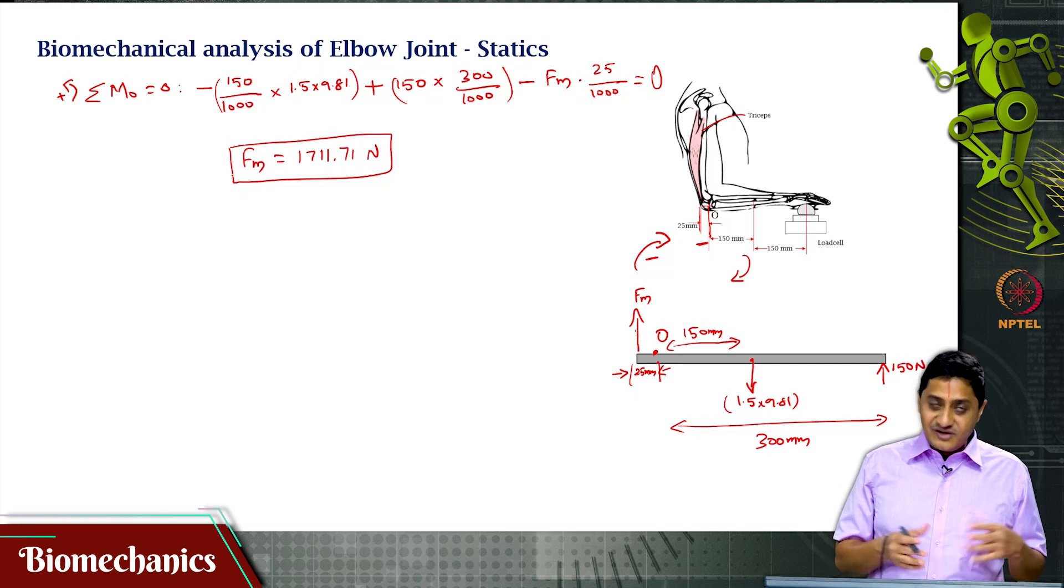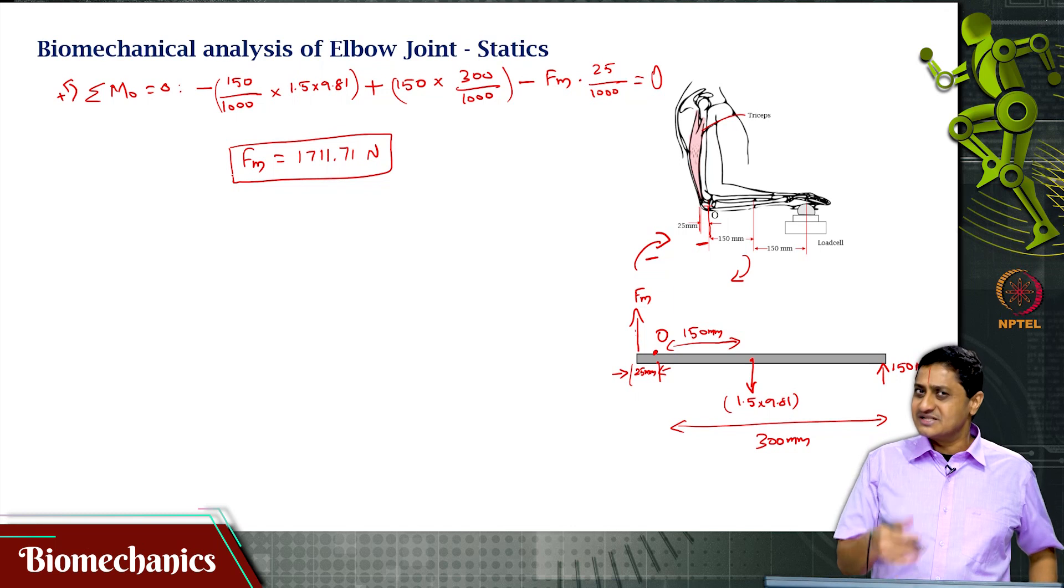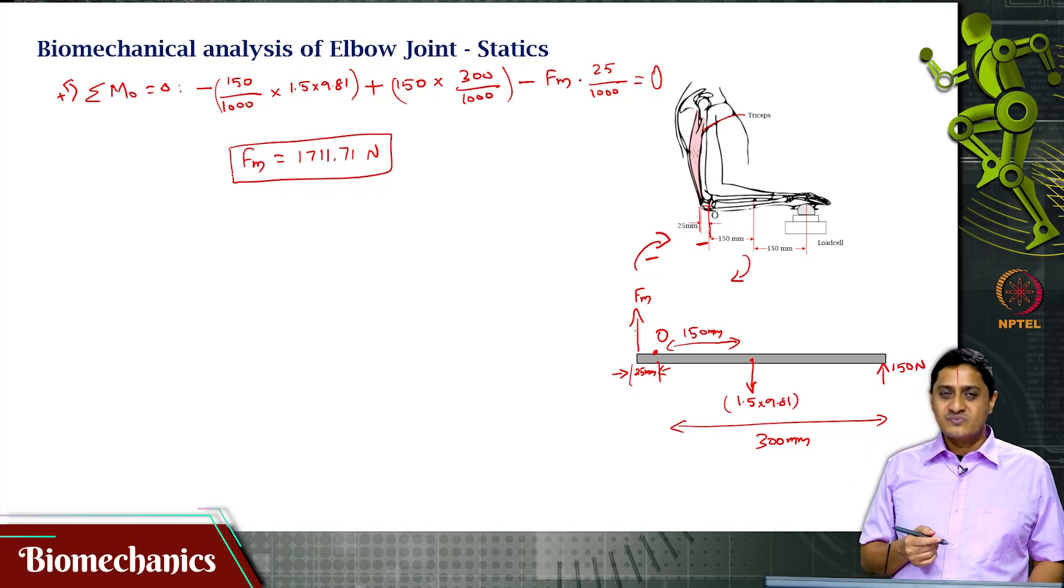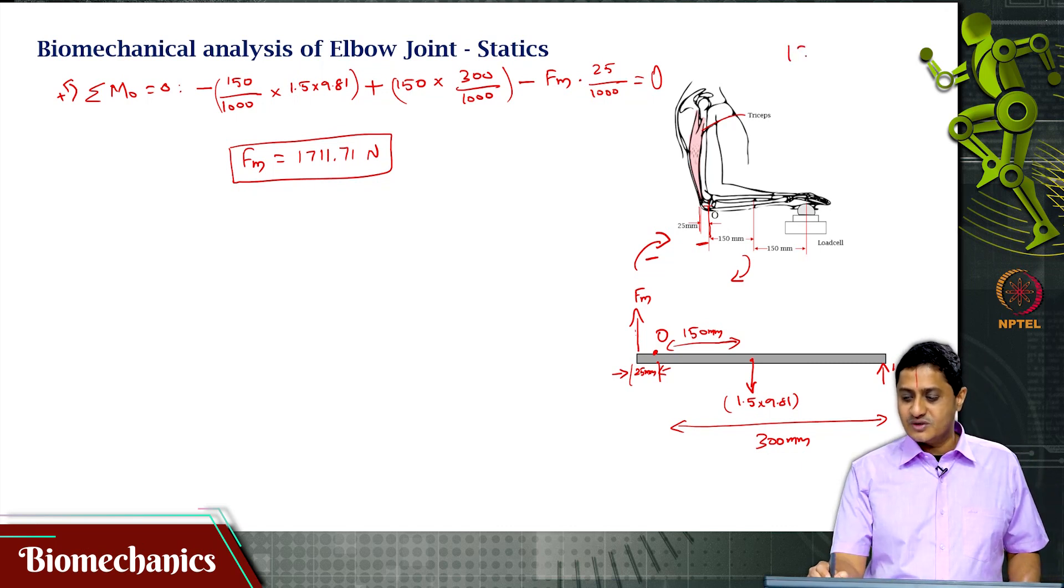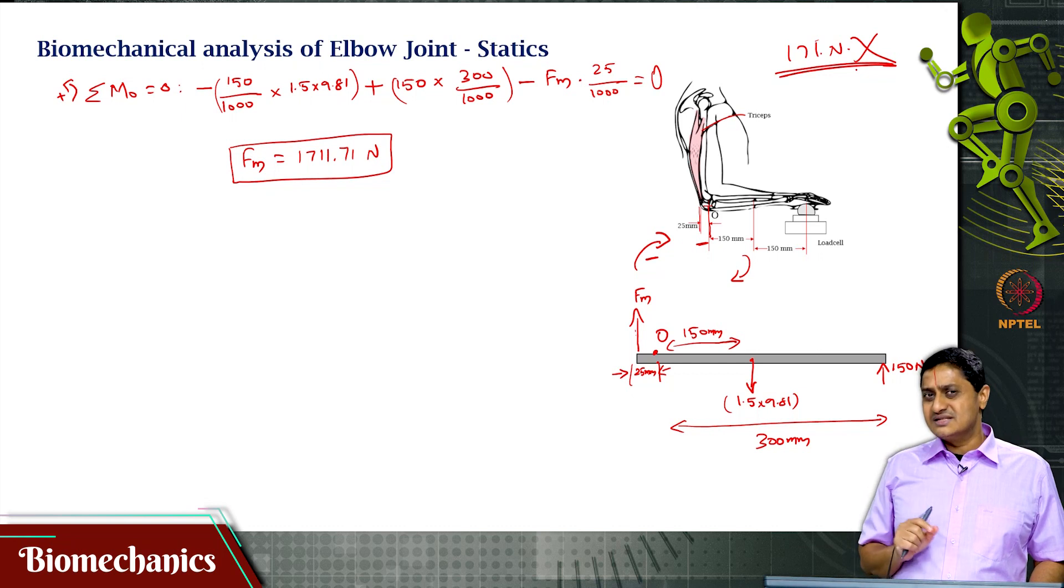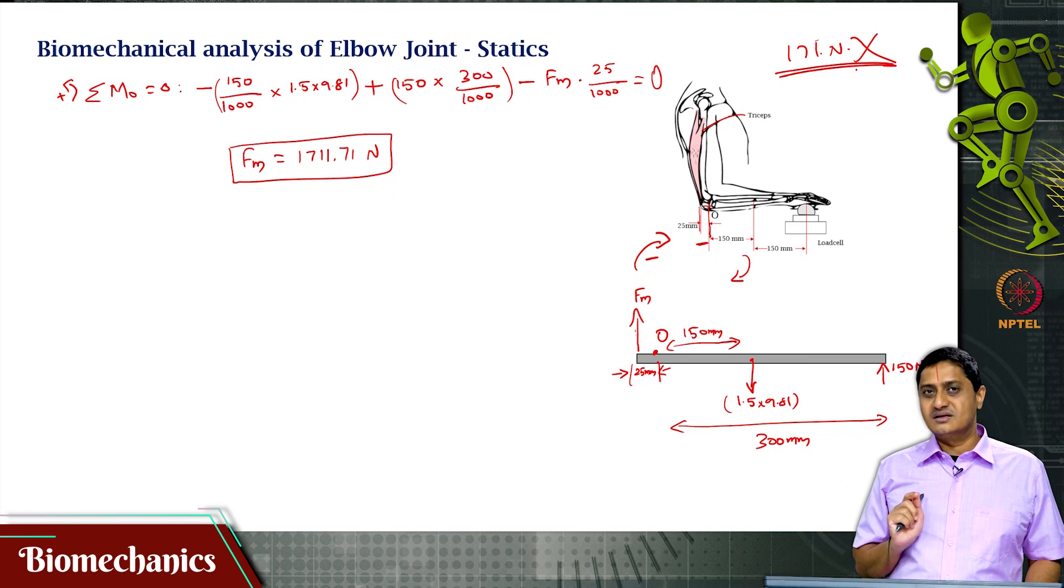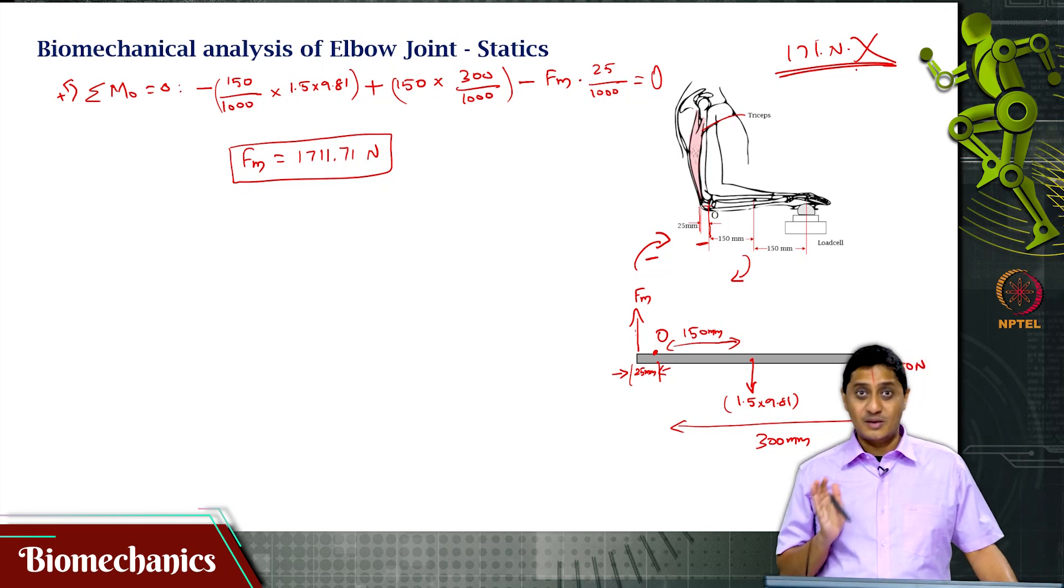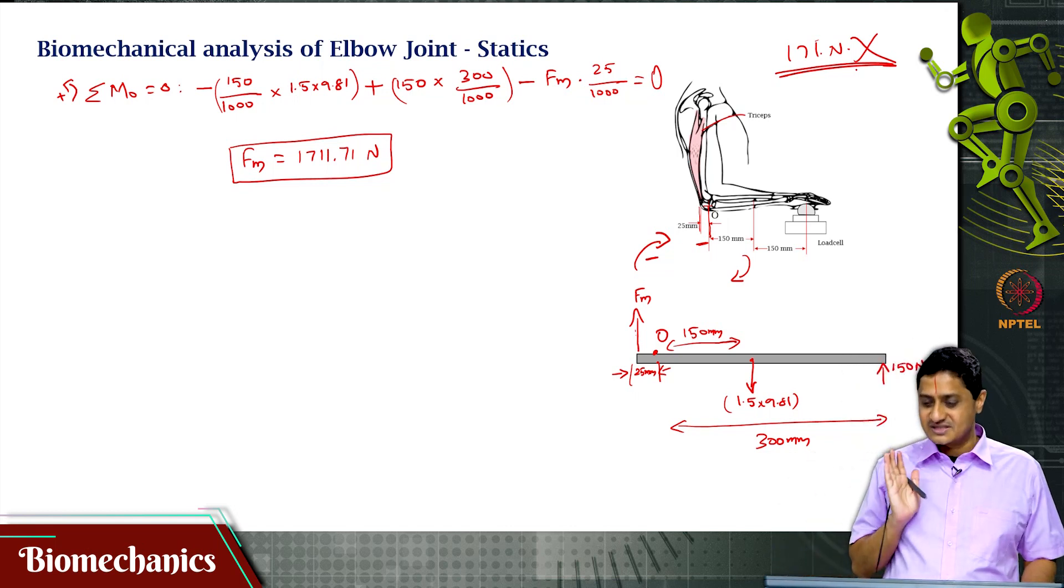But if you are getting an answer as 171 newtons, this is likely wrong. How do you know this? Because earlier I calculated, the distance between the load cell and the joint is 300 mm and the distance between the muscle and the joint is 25 mm. The answer is approximately 12 times the load cell reading, approximately this is my expectation and that is correct.